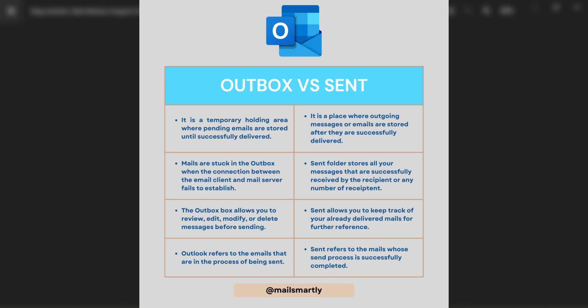The third difference: the outbox allows you to review, edit, modify, or delete messages before sending. This is a very useful feature of Microsoft Outlook — if you have created an email that is not yet complete, or you want to review, modify, or entirely remove it, you can easily go to the outbox, make all necessary changes, and then send the email. The sandbox send folder allows you to keep track of your already delivered mails for further reference, and you can filter your sent emails to find any buried message easily.